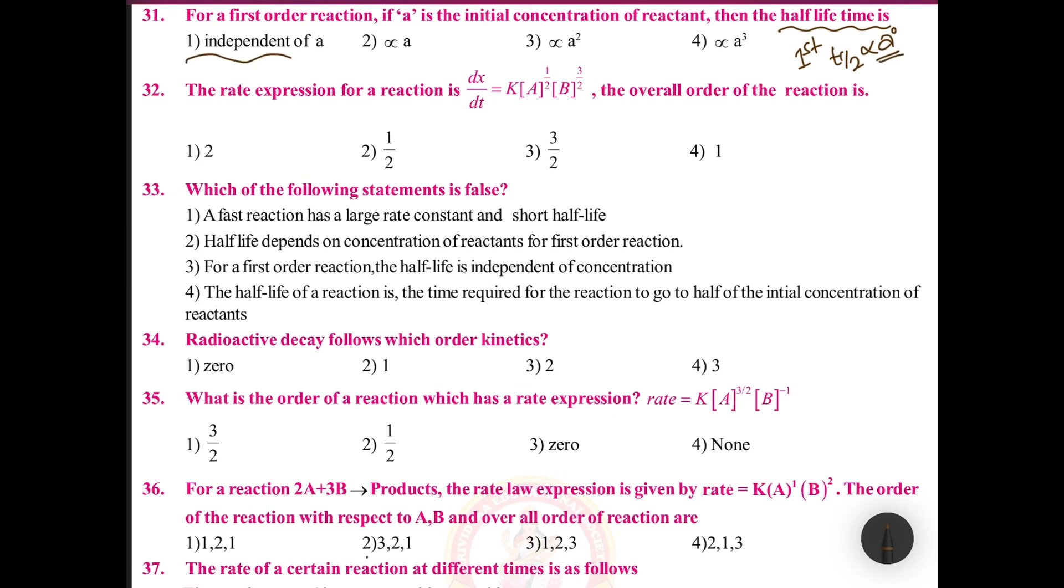The rate expression for a reaction dx/dt is equal to k times A to the power 1/2 times B to the power 3/2. Then overall order is 1/2 plus 3/2. Order is sum of the powers of the concentration terms, so this is nothing but 2.